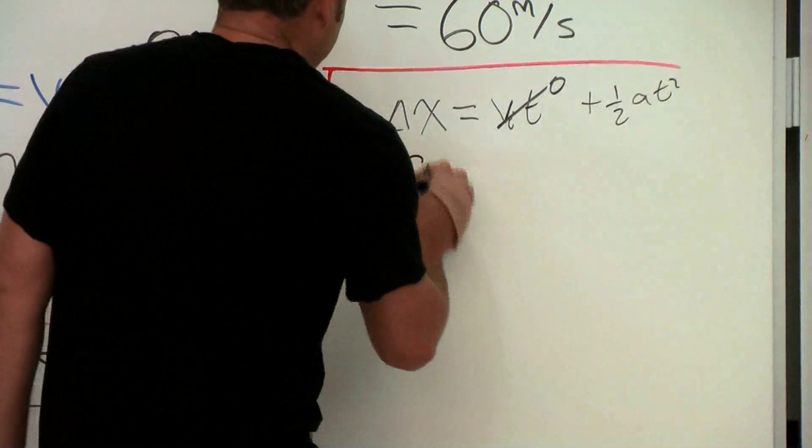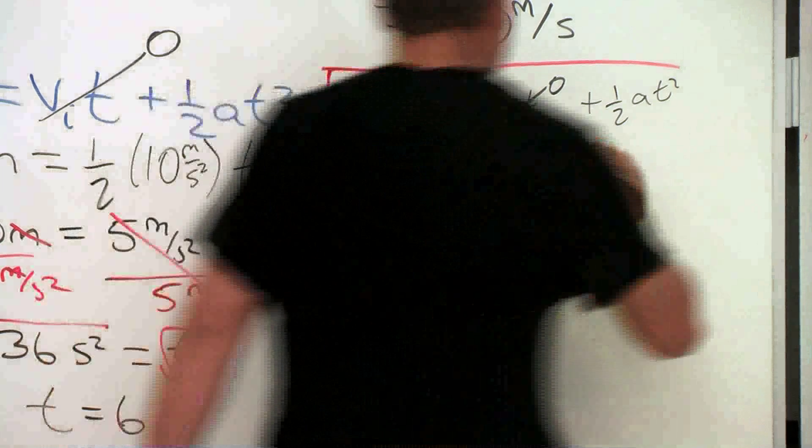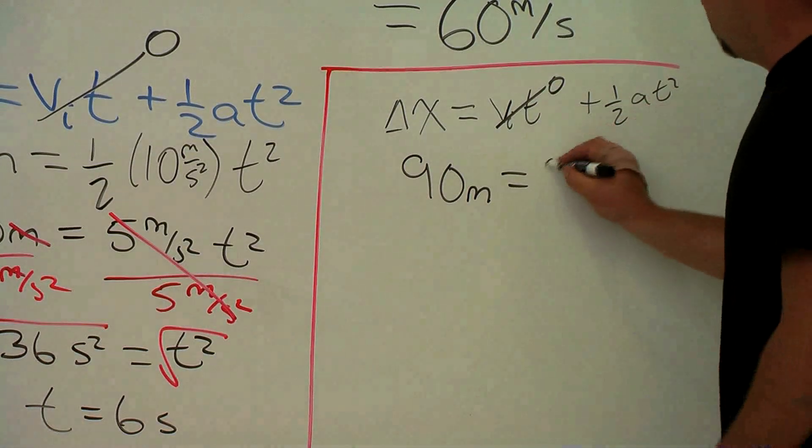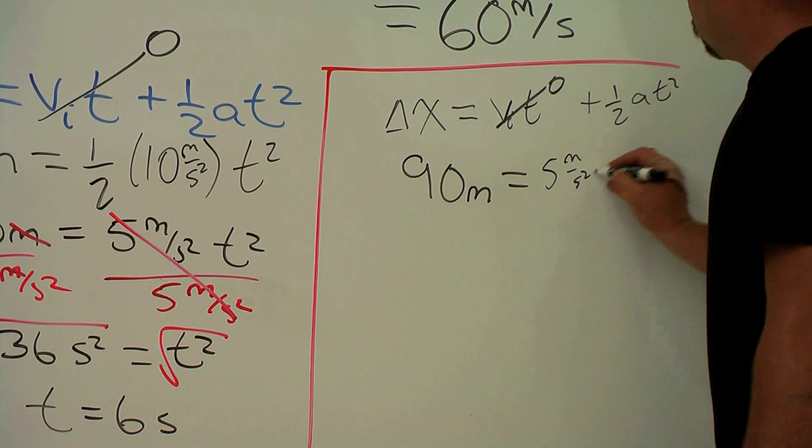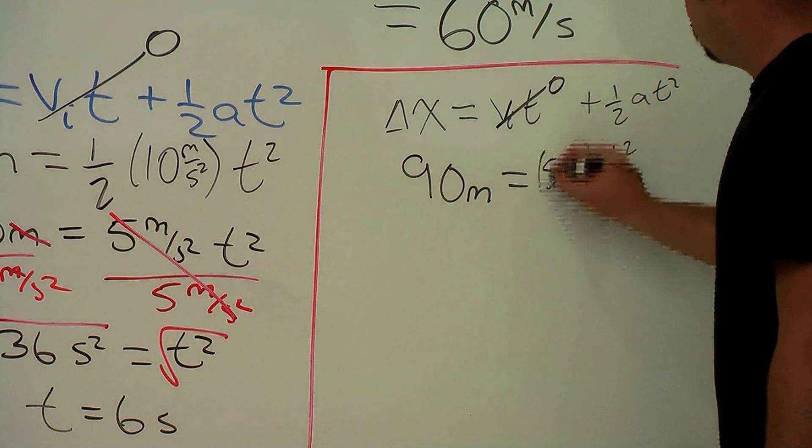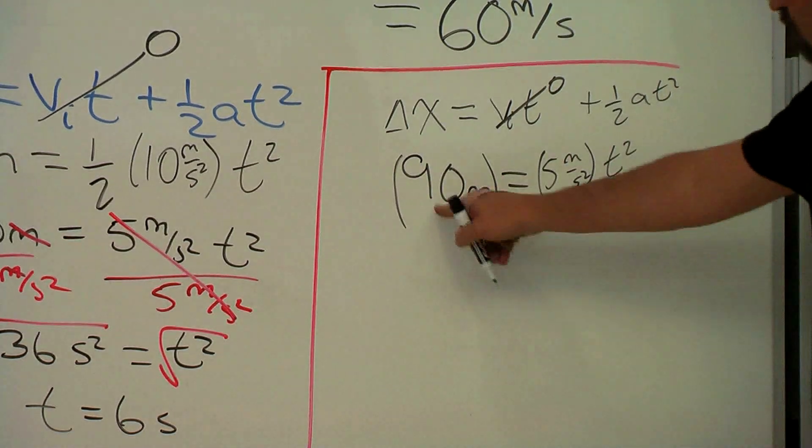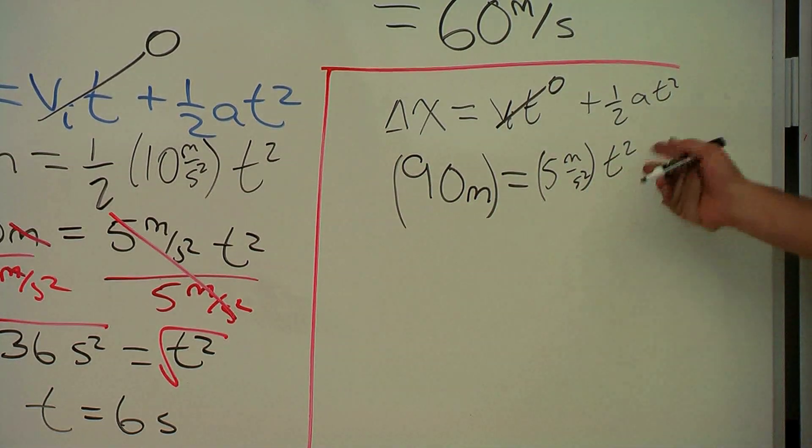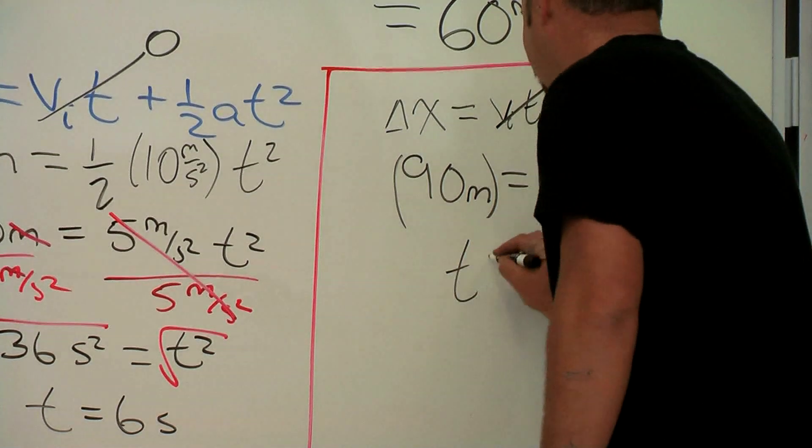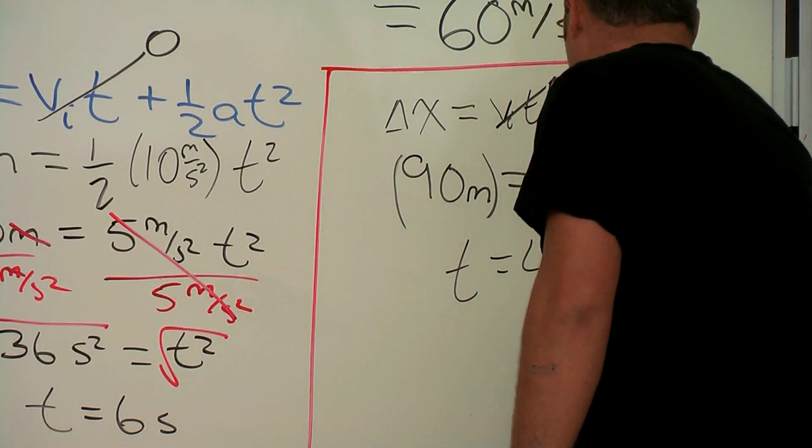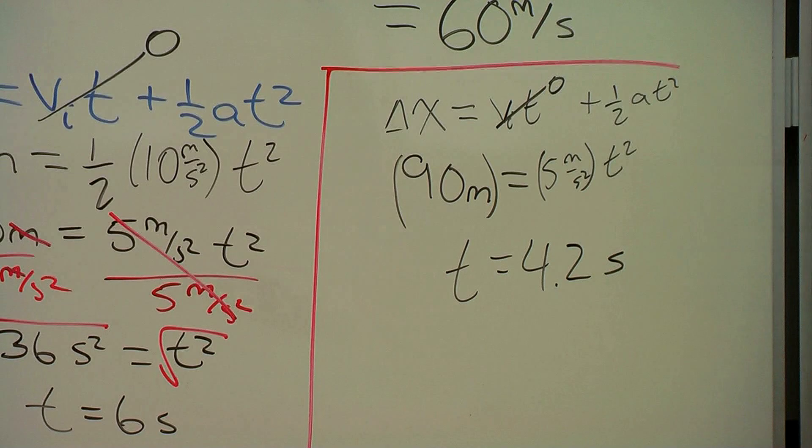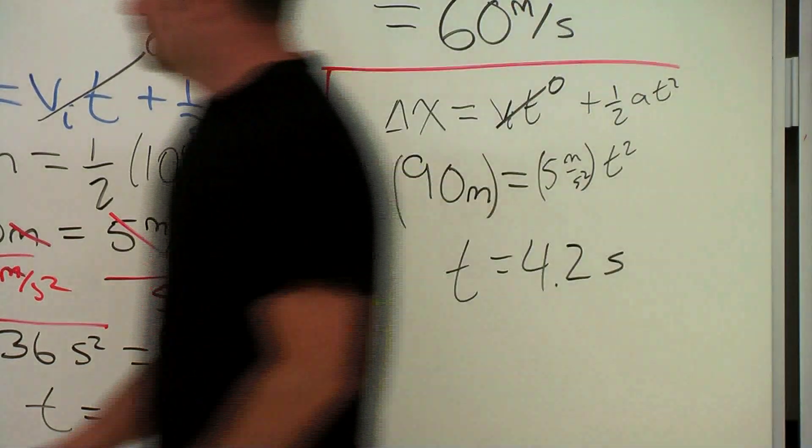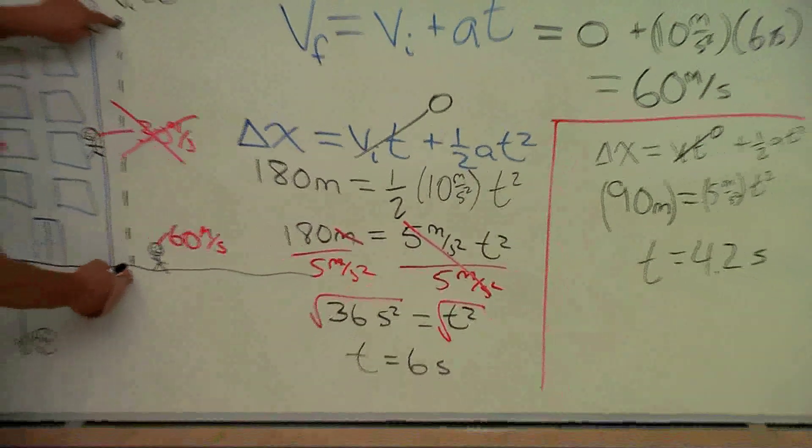Plugging in, I get 90 meters equals one half times ten, which is five meters per second squared, times t squared. Then again I divide both sides by five, I take the square root, and I get a time of about 4.2 seconds.